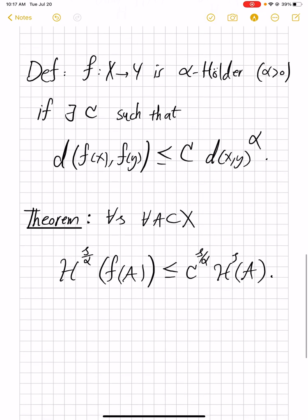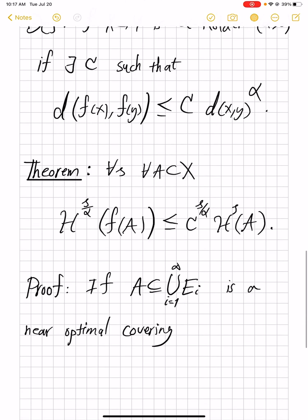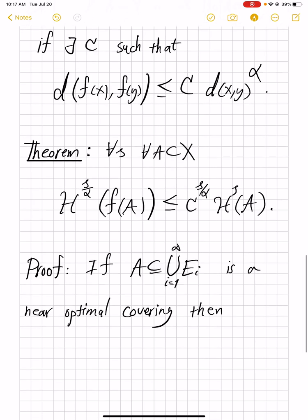The proof is very similar, but I want to point out the main fixings you need to have. If A is contained in union of E_i, I don't want to get into the content part, so I will be more sketchy this time. So if A has a near-optimal delta covering.